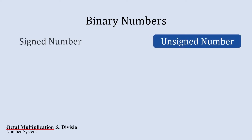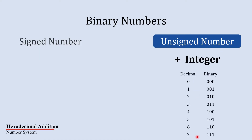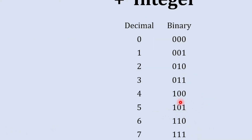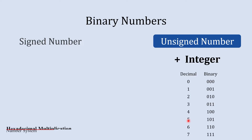Unsigned binary numbers are basically non-negative integers or positive numbers, and that can be represented in binary very easily. These are all positive integer numbers represented in binary. Here you can see one thing: all these bits are used to represent a number, and from this you can find the range that can be represented by an n-bit binary number.